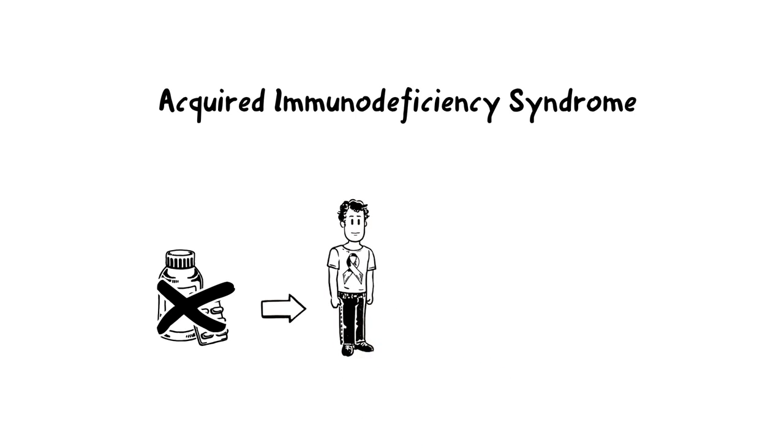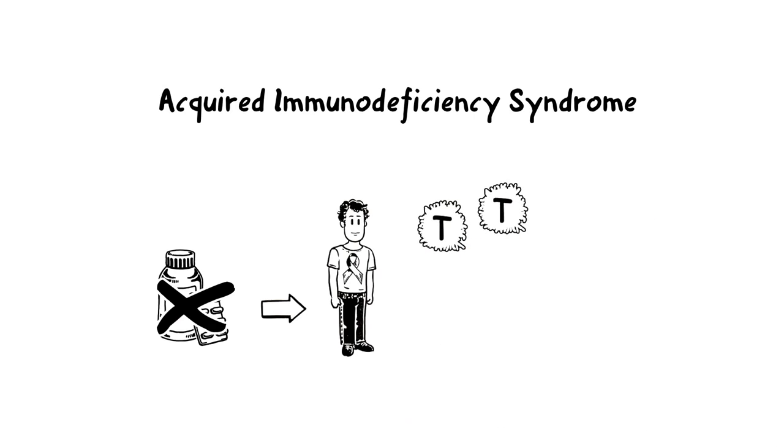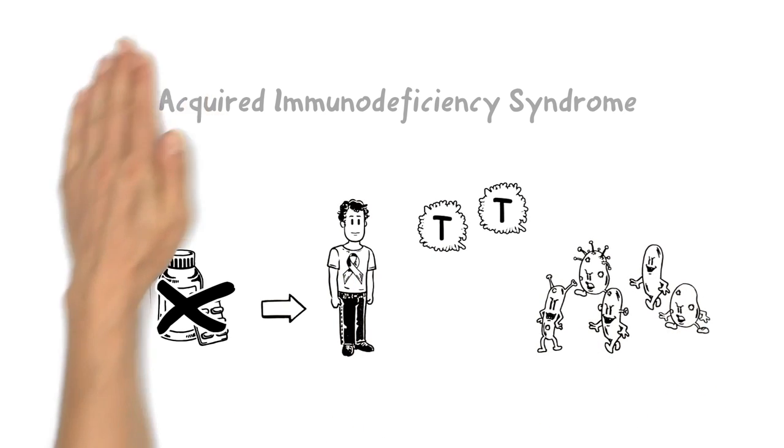Without treatment, it takes eight years on average for a person with HIV to develop AIDS, or acquired immunodeficiency syndrome. By then, there aren't enough T-cells to fight off various infections and diseases, so it's not the virus directly, but the diseases that are eventually fatal.